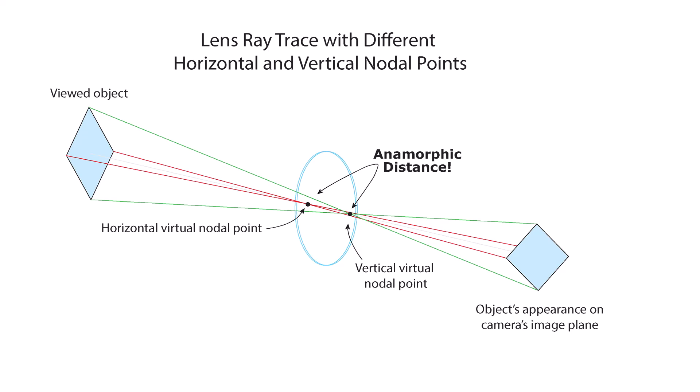Anamorphic lenses can have two different nodal points, one for the horizontal direction and one for the vertical. You can see that here, where you see horizontal rays intersecting at one point and vertically aligned rays intersecting at another.